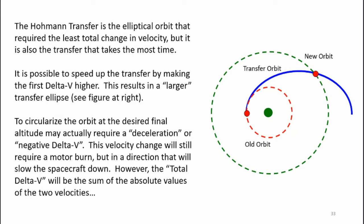Now this requires more delta-v which requires more propellant which makes the rocket heavier and more expensive. So ideally we like to use the Hohmann transfer to do things as efficiently as possible.